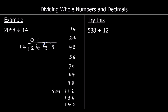How many 14s go into 65? 4×14 is 56. The difference between 56 and 65: from 56, there's 4 to get to 60, and then another 5 to 65 — so 9 left over. I carry 9 over into the ones. How many 14s go into 98? Counting up: 1, 2, 3, 4, 5, 6, 7 — that's 7×14 equals 98. So the answer is 147.